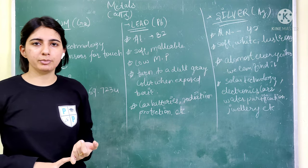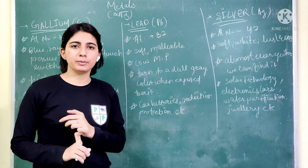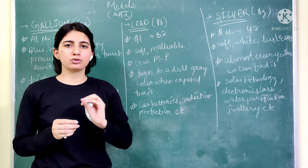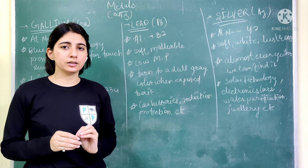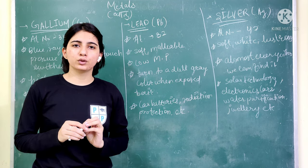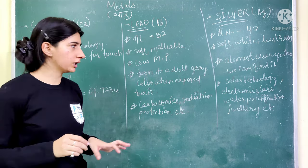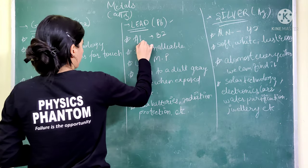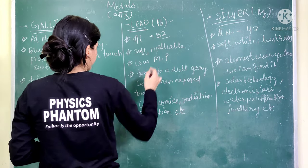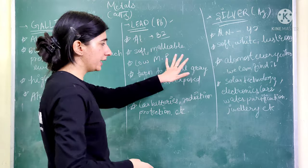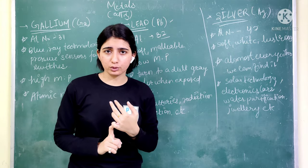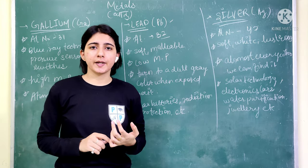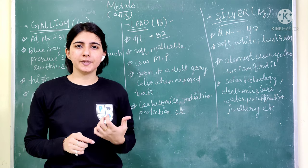The lead symbol is Pb. It is denoted by Pb. Besides this, a common use is in pencil lead. The atomic number of lead is 82.